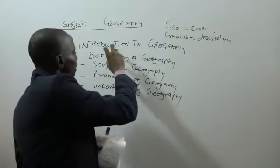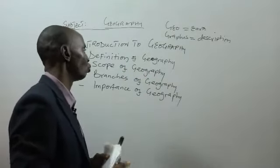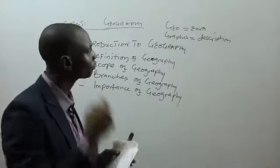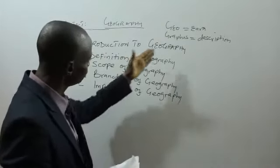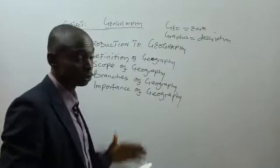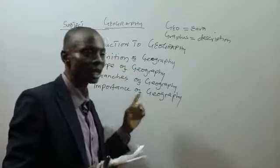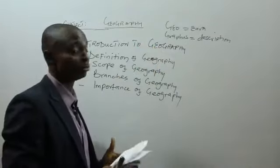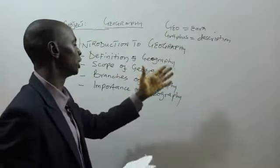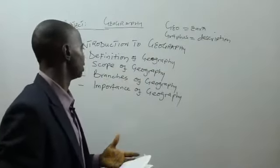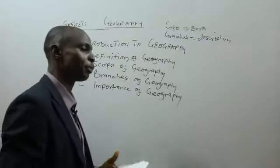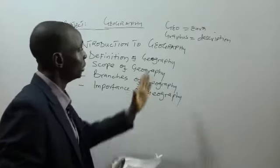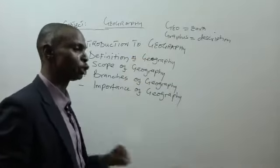So when we are talking about geography, we are talking about: number one, the description of the earth; number two, the description of human activities; number three, the description of both living and non-living things. There is an argument whether geography is a pure science subject, an art subject, or a social science subject. But as we delve into the detail of the study of geography, you will realize that geography is not purely an art subject — it is a science subject because it connects with mathematics, chemistry, physics, and biology, as we are going to see.